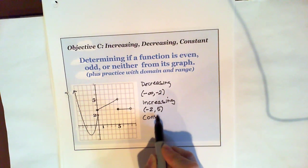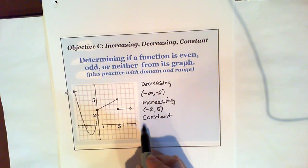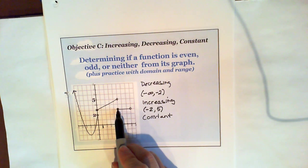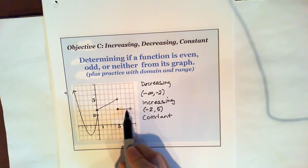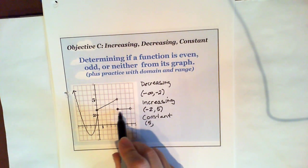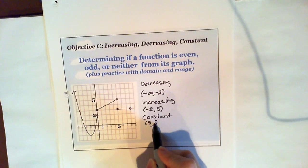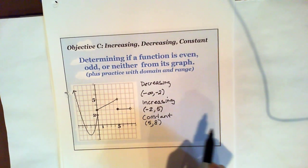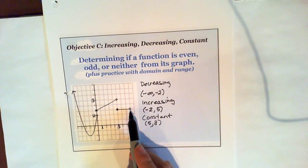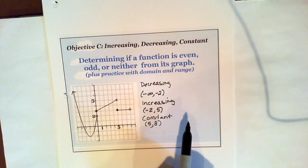Constant is where you have a horizontal line — it remains flat. So at x equals five, it starts to become constant, and it remains constant up to what looks like eight. I don't have a bracket because this is an open circle. So that's decreasing, increasing, and constant.